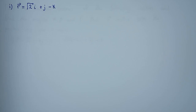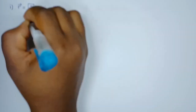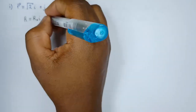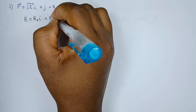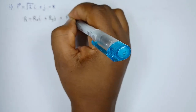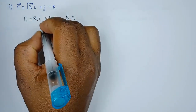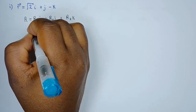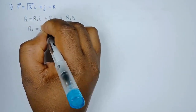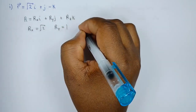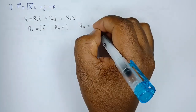So this is the first vector given. What we can do first of all is compare this with the vector form. Comparing this with r being r_x·i plus r_y·j plus r_z·k — the component vectors. Then from there we can clearly see that, comparing with the vector we've been given, r_x is simply √2, r_y is 1, and r_z is −1.